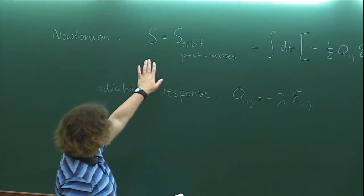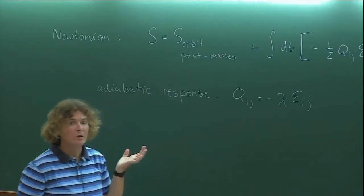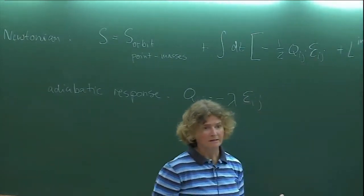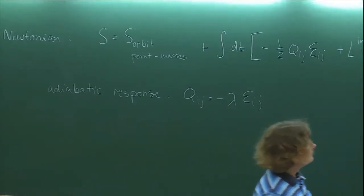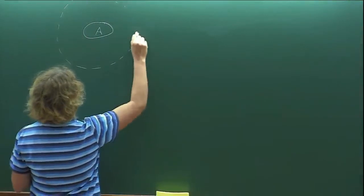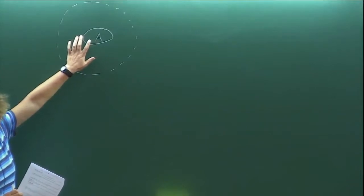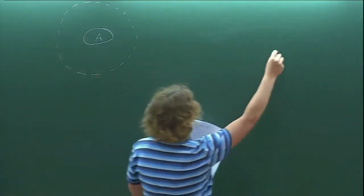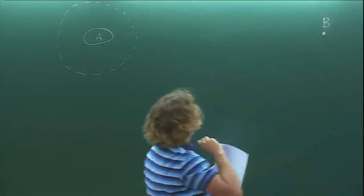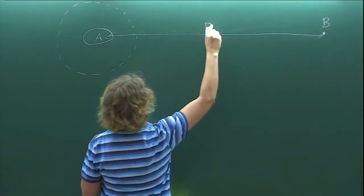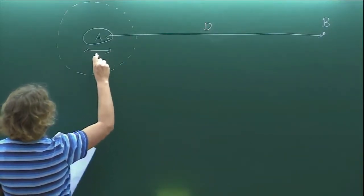I claimed we could just take this action and make it into a relativistic result with some small modifications. The first thing we had to do is figure out what q and e mean in general relativity. Let me remind you of the setup we were considering for the binary system: we had an extended object A with a local neighborhood defined around it.